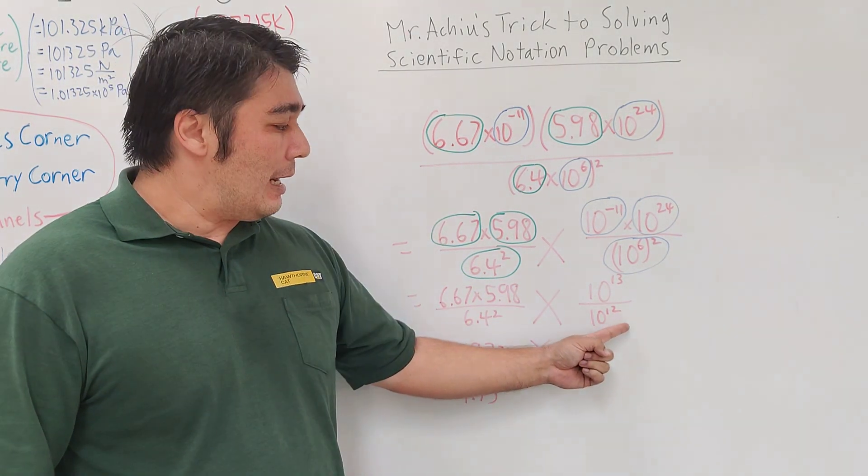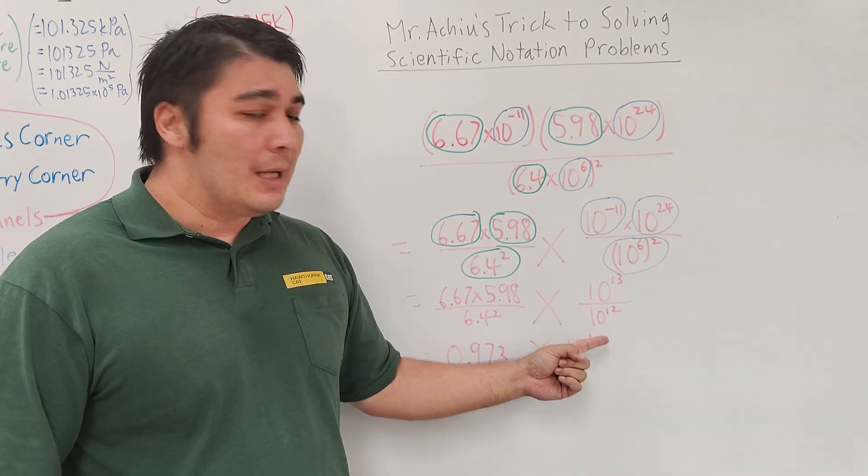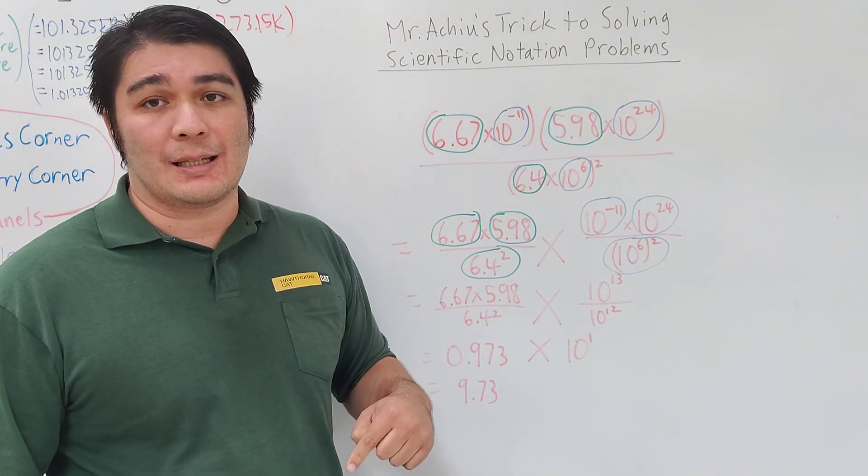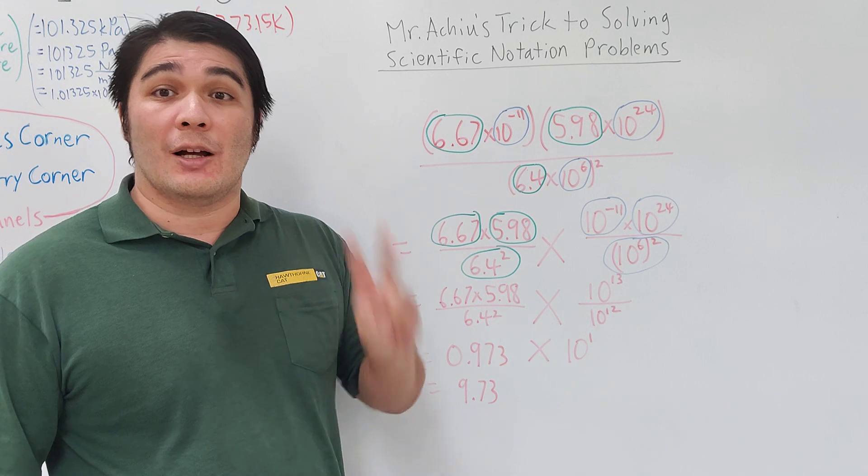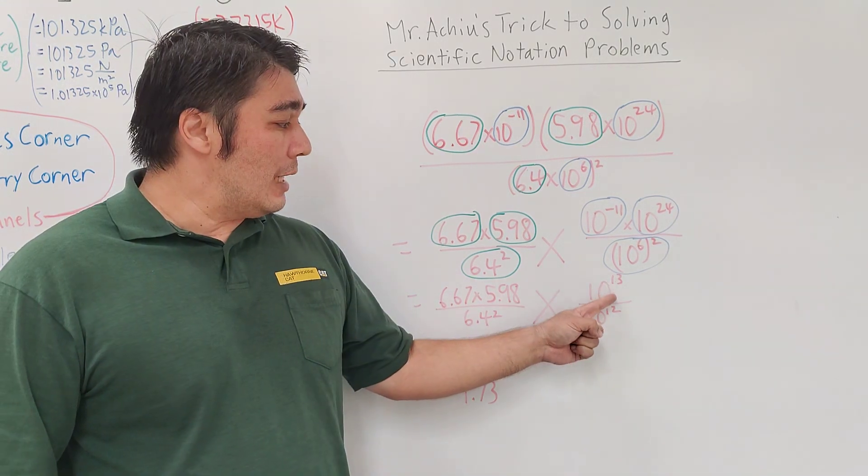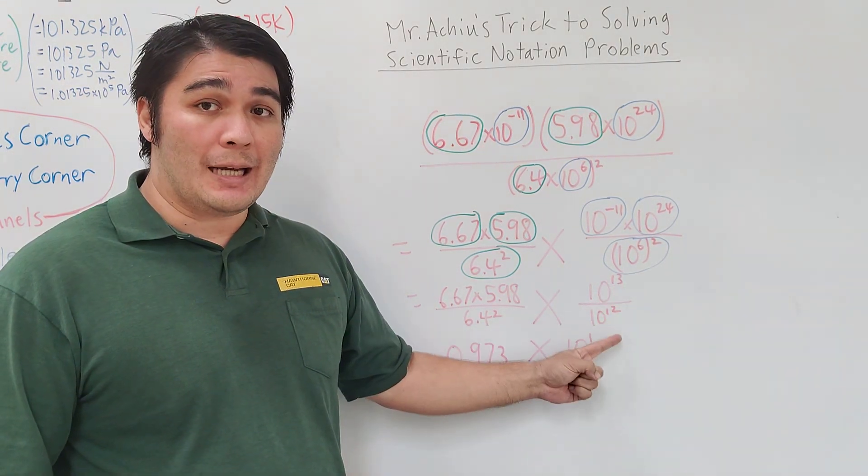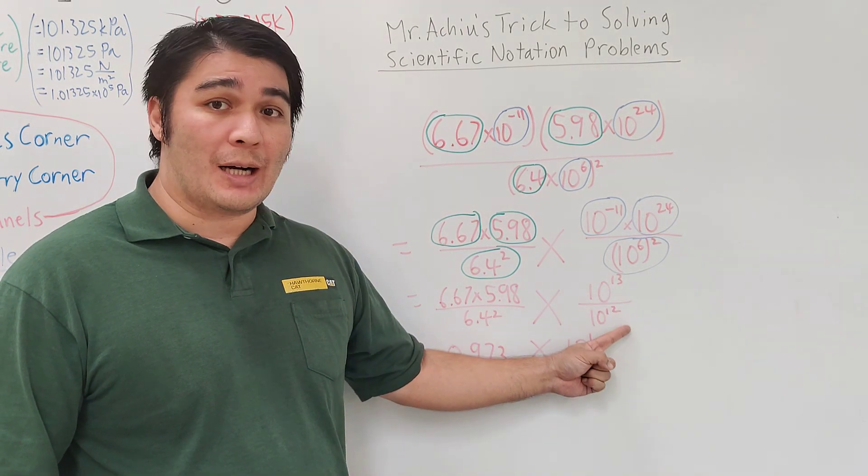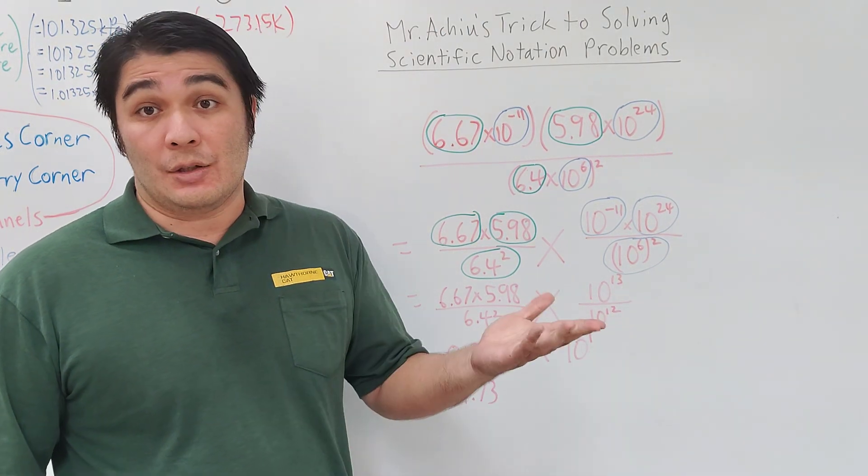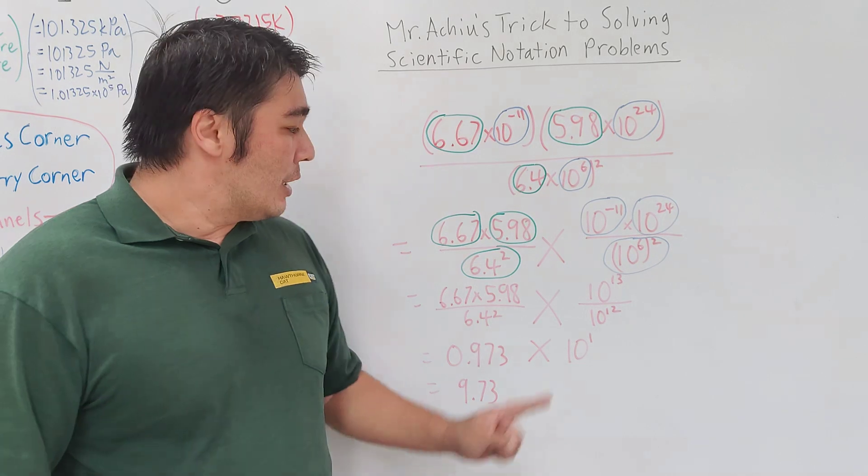This fraction, 10 to the 13th divided by 10 to the 12th, is law number two. I take the exponent in the numerator and subtract the denominator: 13 minus 12 is 1, so I get 10 to the first.